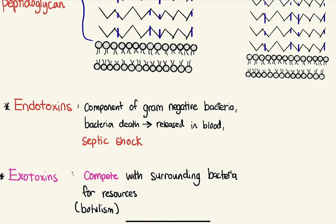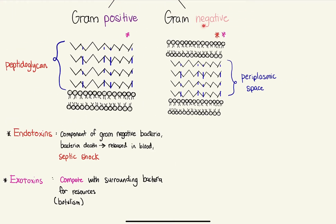Endotoxins are only present in gram negative bacteria. 'Endo' means inside, which makes sense because the endotoxin is inside the outermost bilayer — it's a component of the gram negative bacteria. When the bacteria dies, initially it's not a big deal. But if this bacteria is inside a human body and we send in antibodies to destroy it, the endotoxins are released. This causes septic shock because blood leaks into the tissues, causing a drop in blood pressure, which is very dangerous and can often cause death.